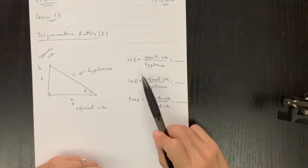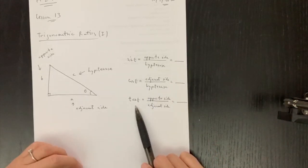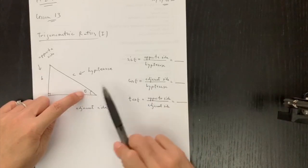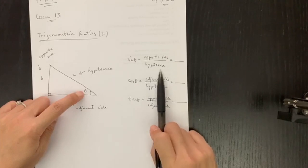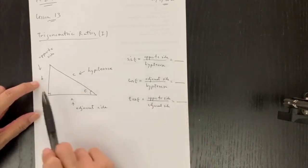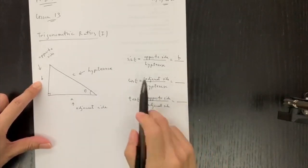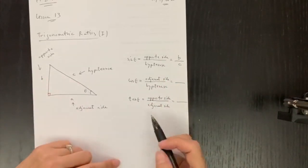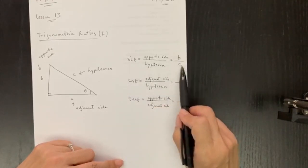Now we come to the formula of sine theta, cosine theta, and tangent theta. The formula of sine theta — theta is here — is equal to opposite side over hypotenuse. So B is the opposite side, and C is hypotenuse, so therefore sine theta is equal to B over C.